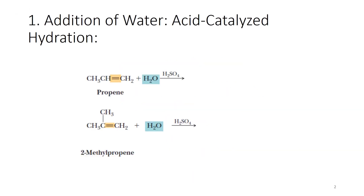If we start with the addition of water, which is the acid-catalyzed hydration — this is the addition of water in the presence of acid — because it follows Markovnikov's rule, what we expect is the addition of the hydroxyl group to the carbon which carries the least number of hydrogens, and the hydrogen is added to the carbon that contains the larger number of hydrogens. If I look at the product, it will be CH3 CH(OH) CH3. So from propene, we were able to form 2-propanol.